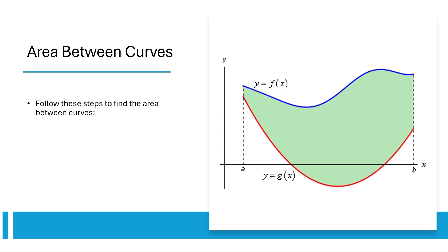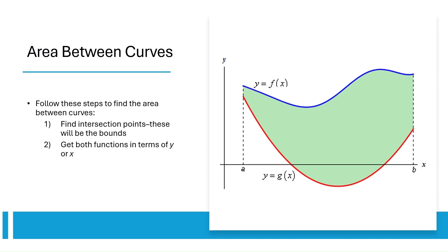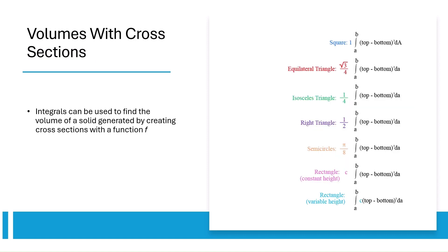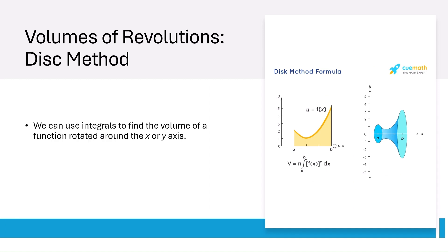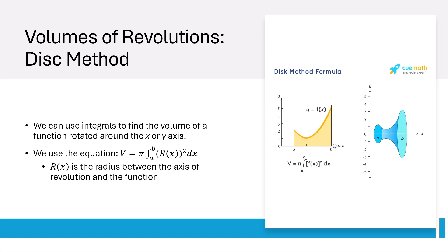To find the area between two curves f of x and g of x, first find the intersection points, which will be the bounds of the integral. Then get both functions in terms of the same variable, either y or x. Then integrate the top function minus the bottom function. Integrals can also be used to find the volume of a solid generated by creating cross-sections with the function f — the different cross-sections and formulas are shown to the right. You can also use integrals to find the volume of a function revolved around the x or y axis, using v equals pi times the integral from a to b of r of x squared, where r of x is the radius between the axis and the function.